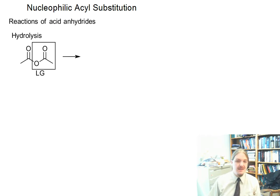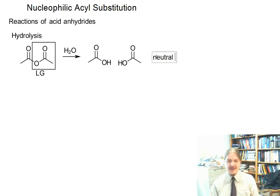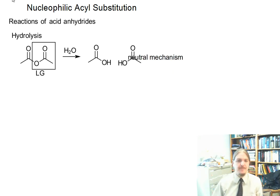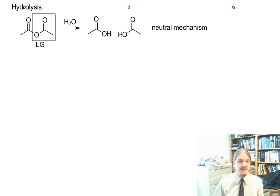So acid anhydrides are again relatively reactive, and so they can be converted into carboxylic acids directly by the reaction with water. This reaction does not need acid or base, but it's certainly improved by acid or base. And in this case, with through proton transfers, the leaving group becomes carboxylic acid as well.